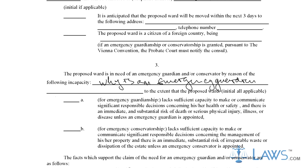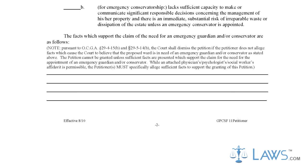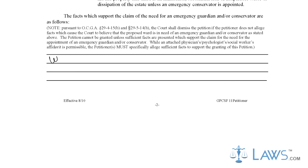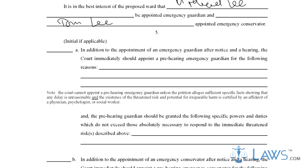Step 5. In Part 5, the petitioner needs to initial all sections that apply and provide details in the lines provided for intentions of asking for an emergency hearing. In the last part of Part 5, initial if a petition for permanent guardianship or conservatorship is being filed along with the emergency form.